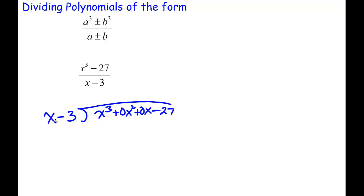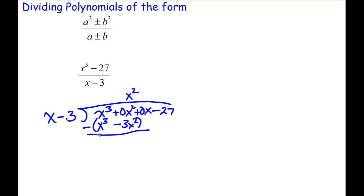So we divide x into x cubed — that goes x squared times. Notice I'm lining up like terms, which helps students place things appropriately as you continue division. So x squared times x is x cubed, and then x squared times negative 3 is minus 3x squared. We subtract: x cubed minus x cubed goes away, leaving us with 3x squared, and then we bring down the next terms.